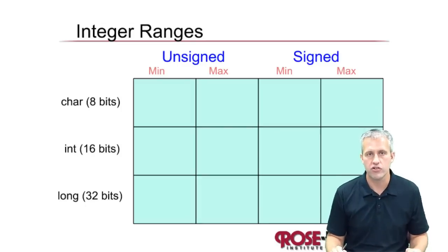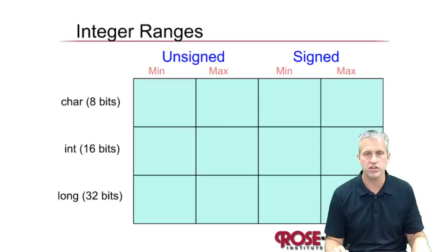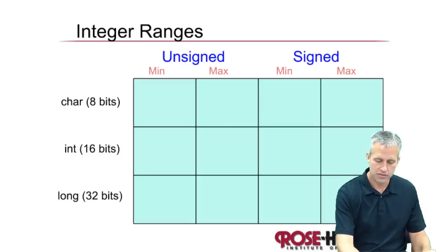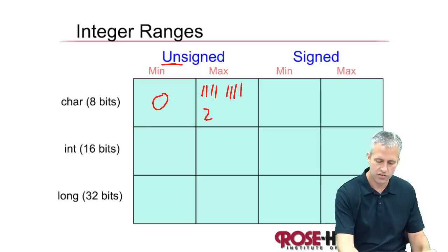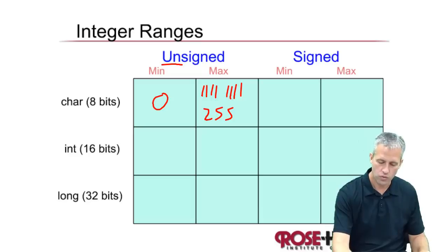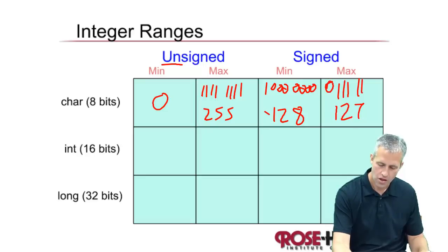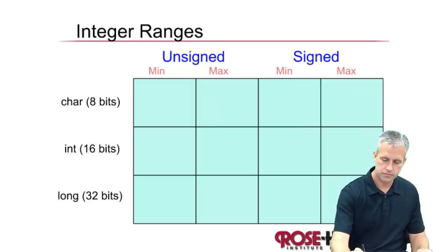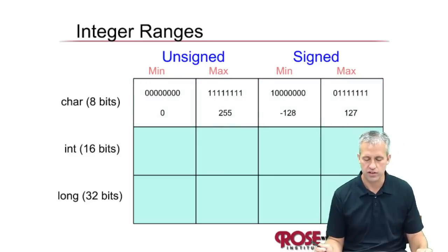You really need to know the ranges for integer types. For 8 bits in an unsigned world, the minimum is 0 and the maximum is 255 — all ones. In a signed world, you can have negatives: it goes as low as negative 128 and as high as 127. It's helpful to write both the binary and the decimal representations side by side.